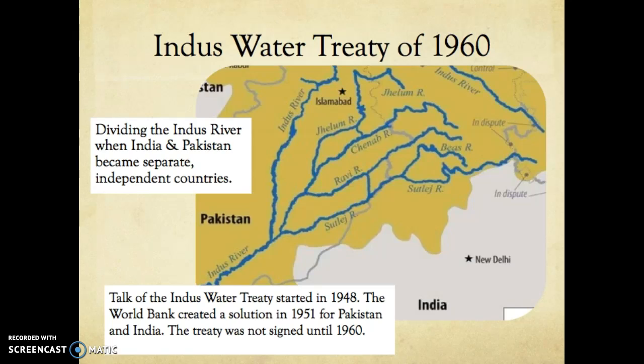When the partition took place, India and Pakistan were obviously divided into separate independent countries of their own, and that meant that the Indus River had to be divided as well, since it was the main supply of water for both countries.